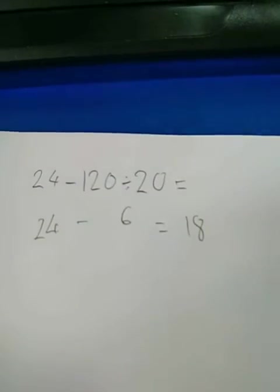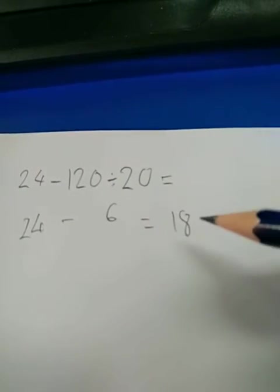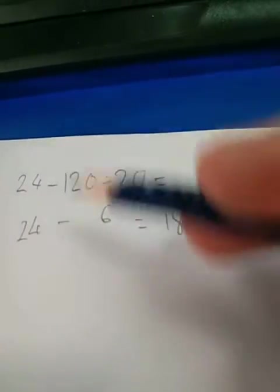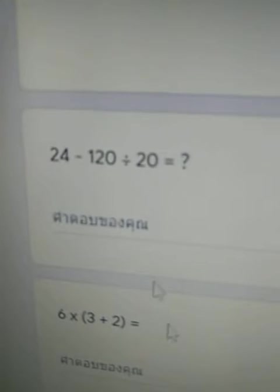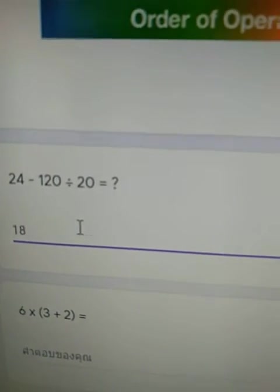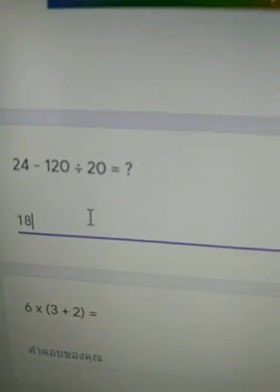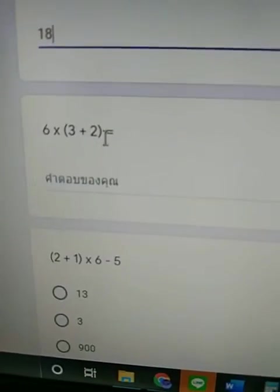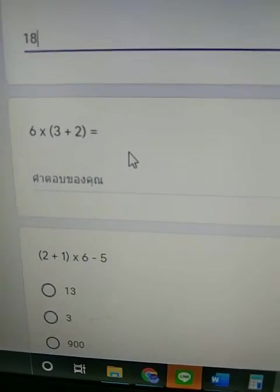So we've got 24 minus 6 equals 18. Easy peasy. So then you get your answer on the scrap paper working on the scrap paper and then up here we just click and we type in our answer 18. Not 187. 18.